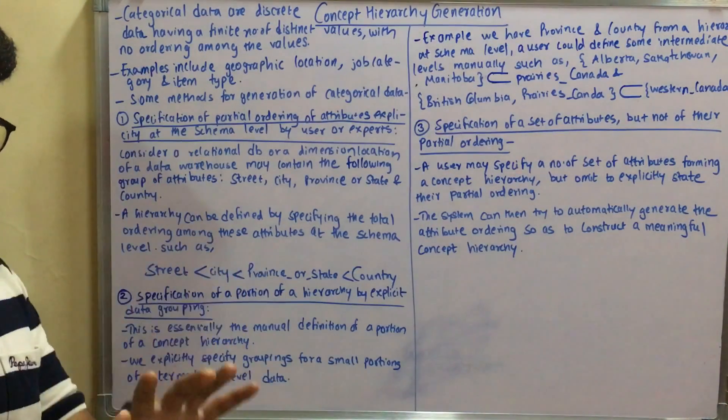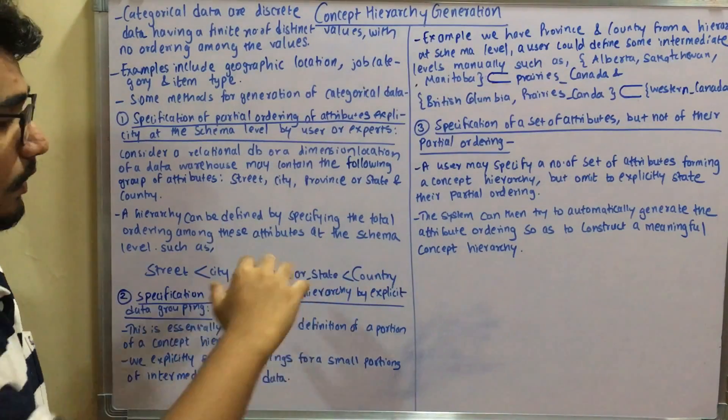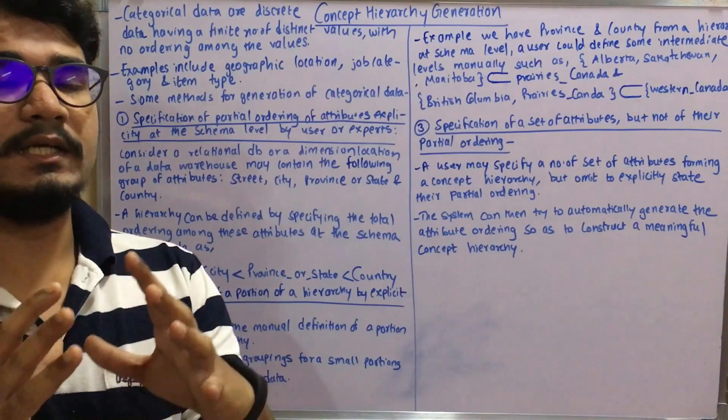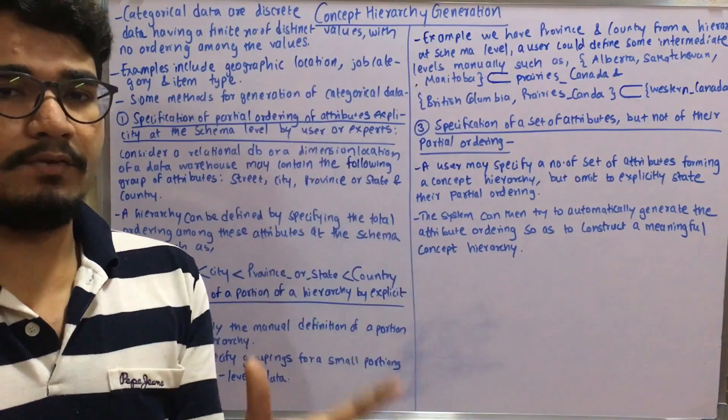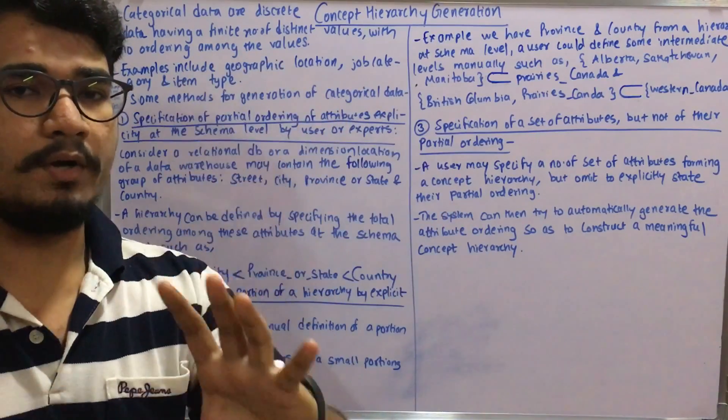A hierarchy can be defined by specifying the total ordering among these attributes at the schema level. First you have the street, then city, then province or state, then country, then continent.